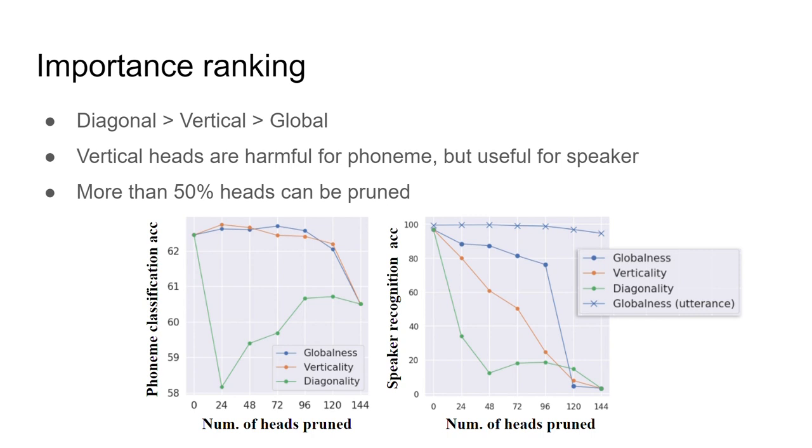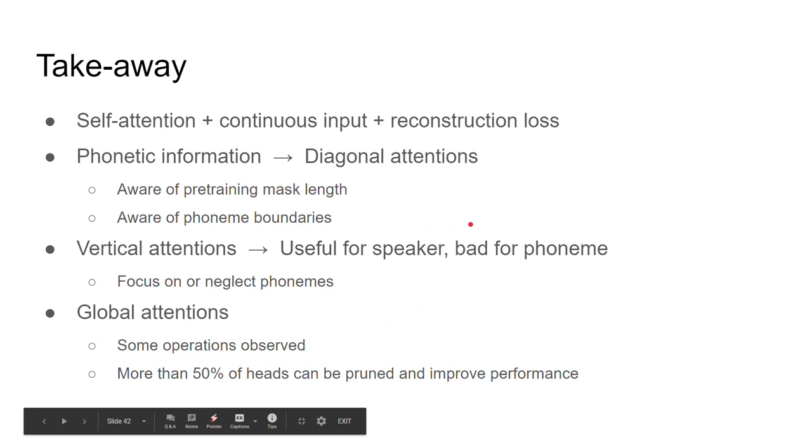For vertical attention, combining with previous findings, this might be due to that vertical heads can entangle distant phones into the current query, making downstream classifier hard to distinguish the original phoneme signal of raw input. If we look at speaker recognition, we found vertical attentions have huge impact on speaker identity in each frame. Pruning them quickly hurts the performance. In a more common utterance level setting, we can even only consider diagonal attention as essential, since speaker identity affected by pruning can be mostly recovered by simple mean pooling. Finally, we conclude that more than 50% of heads can be pruned and boost the performance on phoneme classification without sacrificing speaker identity in utterance level when we follow the globalness metric.